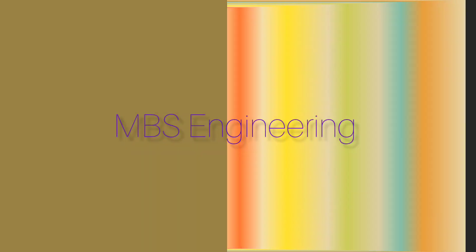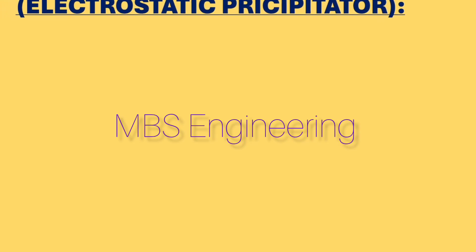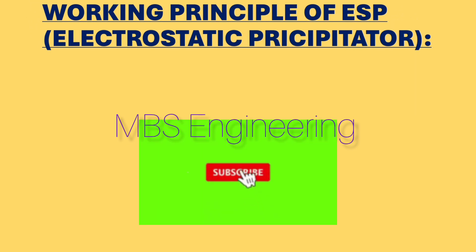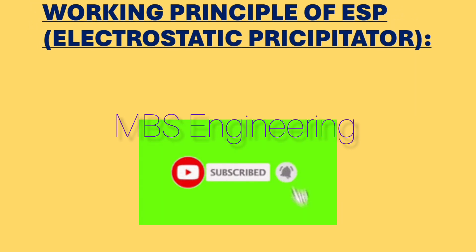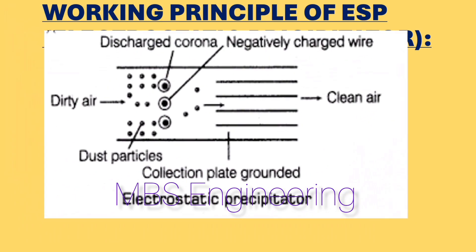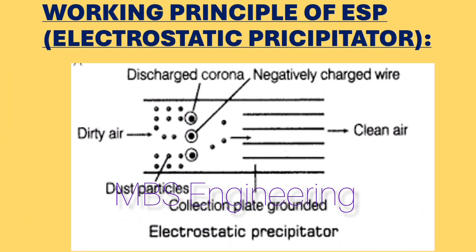Before that, we understand the purpose of the ESP. An electrostatic precipitator, ESP, is a dust-collecting device that removes particles from a gas stream by using electrical energy to charge particles. A high-voltage system provides power to the discharge electrode to generate an electrical field. The particulate entrained in the gas is charged while passing through the electrical field.